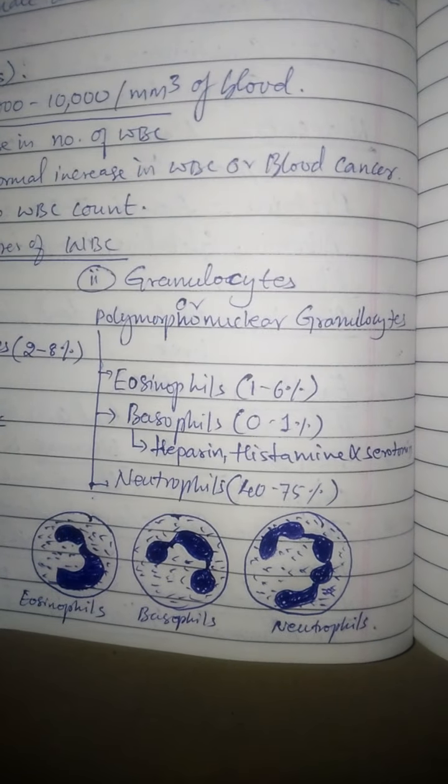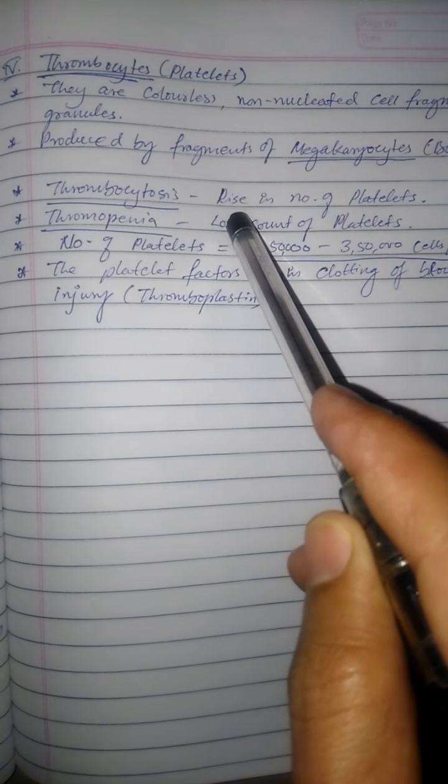Now continuing with thrombocytes: thrombocytes are also called platelets. They are colorless, non-nucleated cell fragments — not cells, but fragments of cells having granules in the cytoplasm. They are produced from fragments of megakaryocytes, which are bone marrow cells chopped off into small fragments called thrombocytes. Thrombocytes are essential components for the blood clotting mechanism. Thrombocytosis is an abnormal rise in the number of platelets.